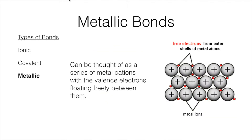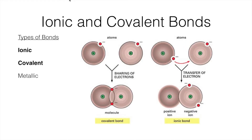The last type of bond to consider is metallic bonding. These aren't really covered on the AP exam, so we can largely ignore them. You can think of metallic bonds as a series of positive cations where electrons roam freely throughout the different cations.